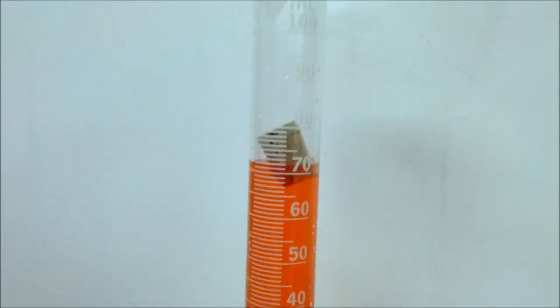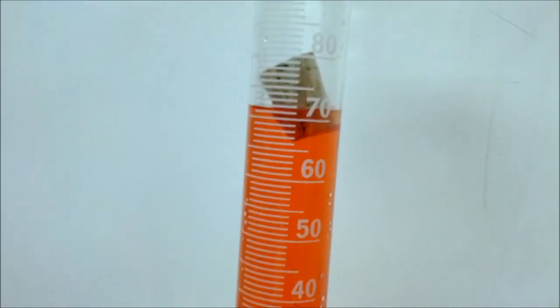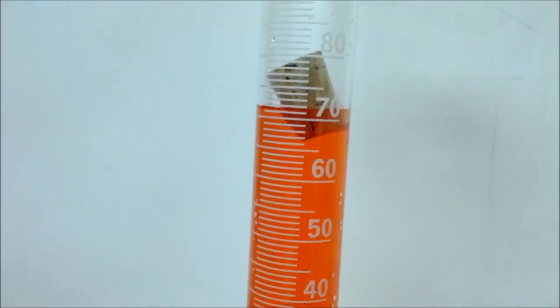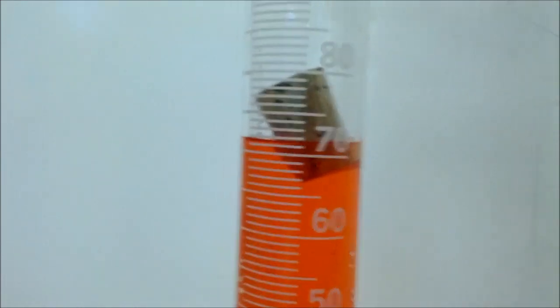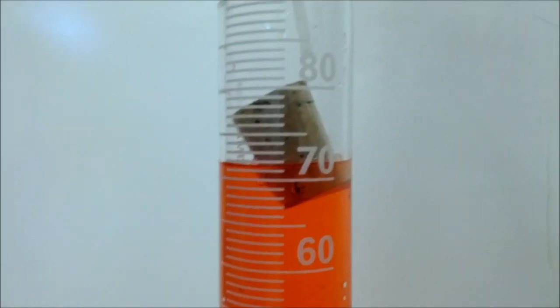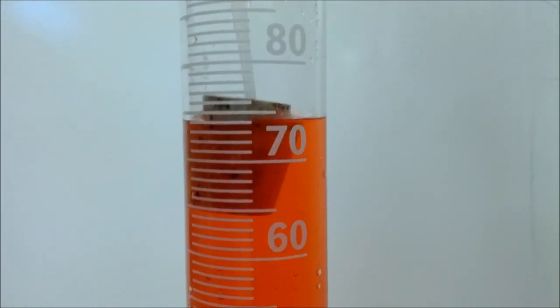All right, see how the cork is floating? And that's not going to give us an accurate measurement of the volume. So what we have to do is push it down totally in the water with something. Ms. Kloss is going to use the pipette that we were using to fill it up with.